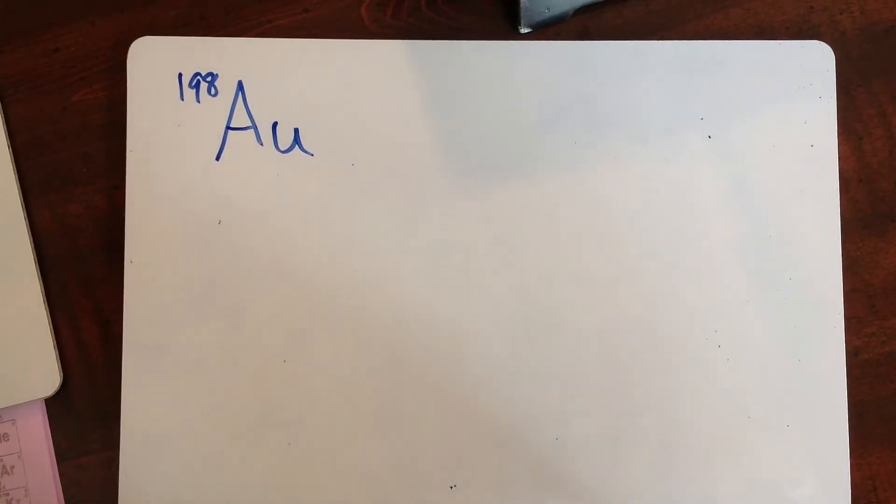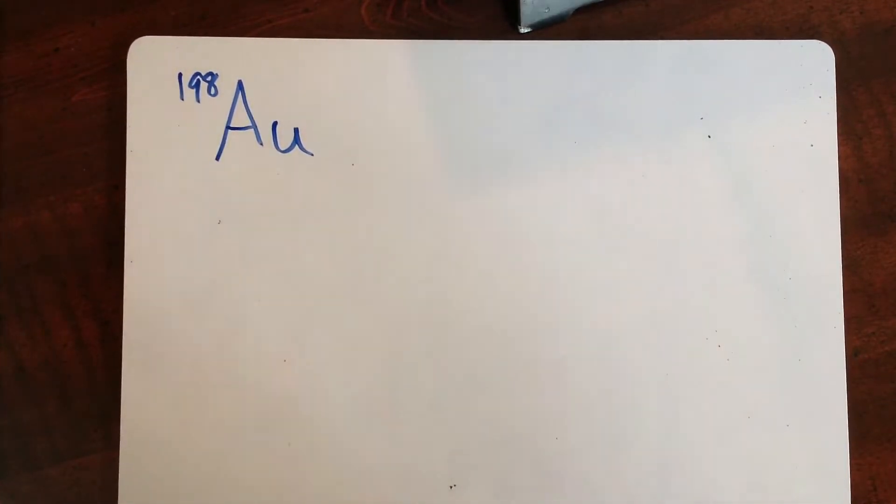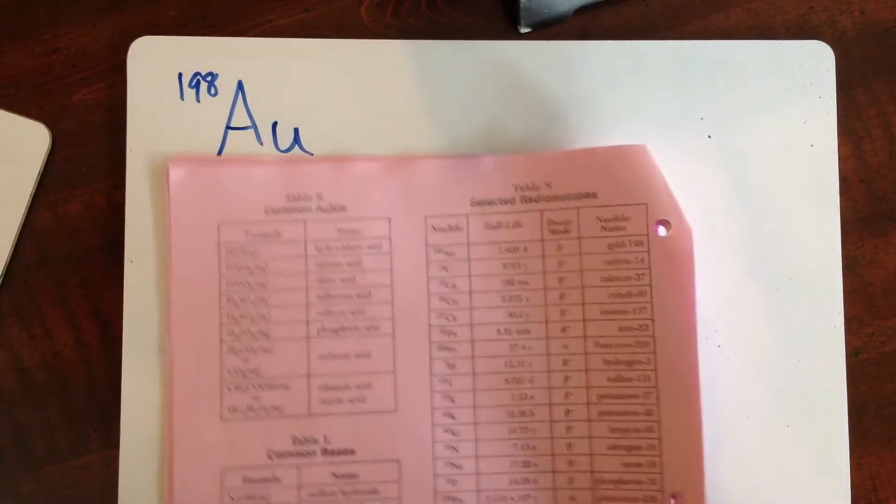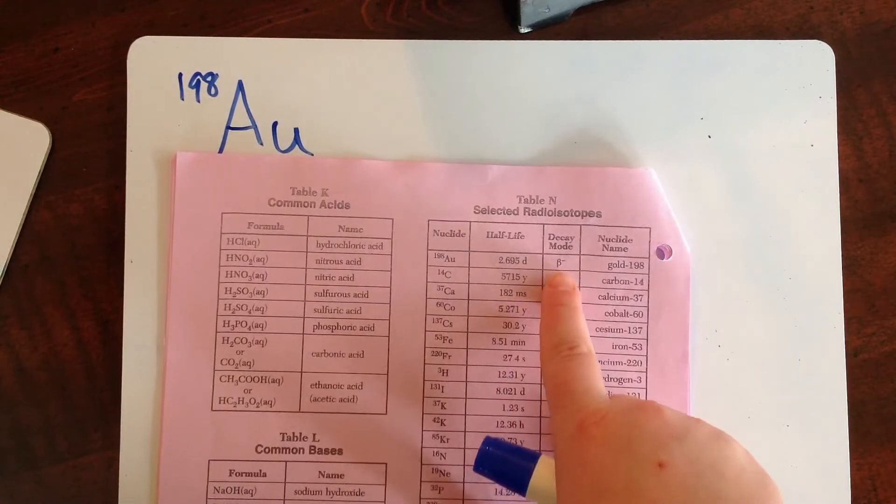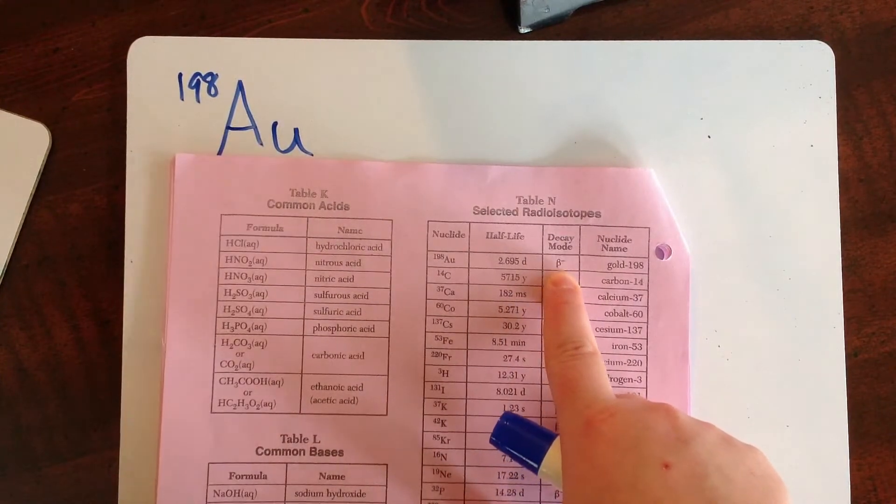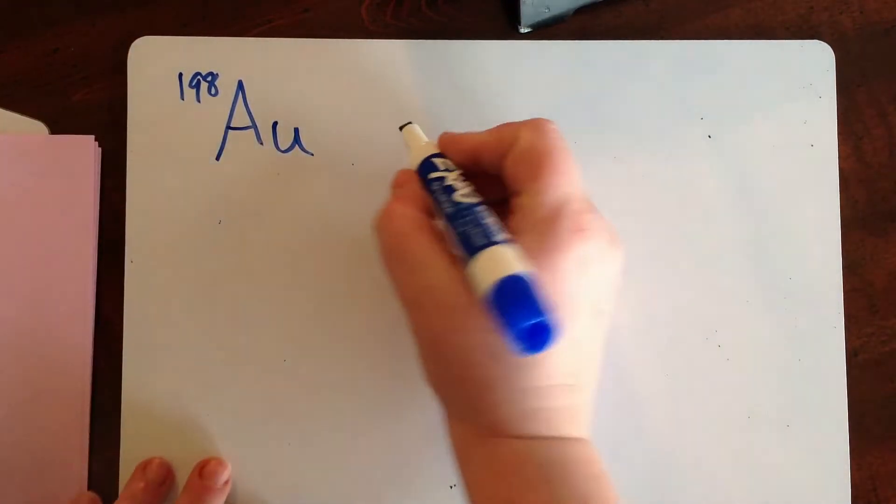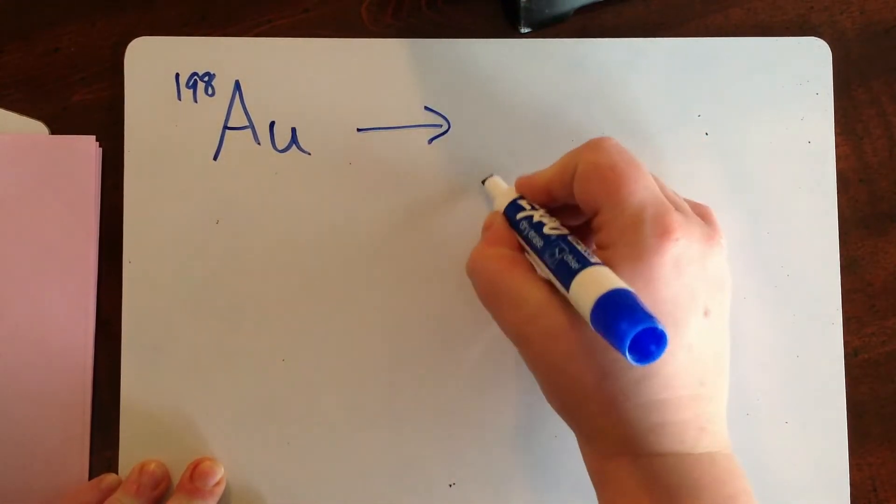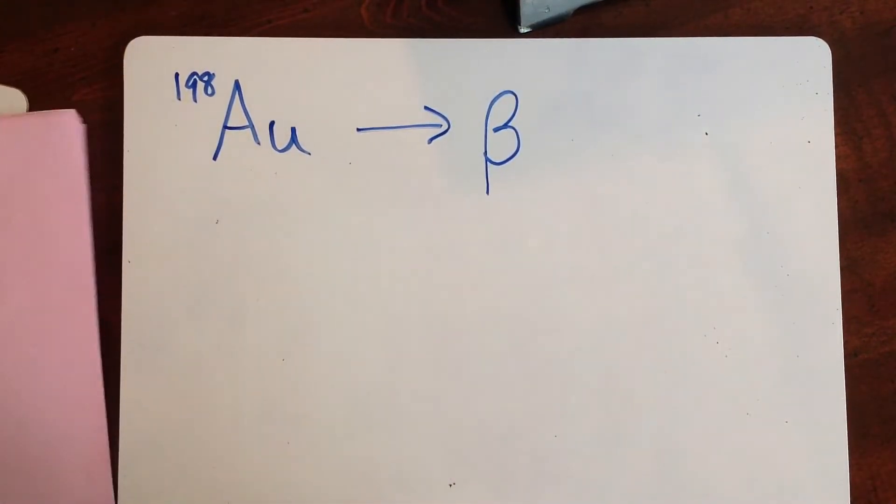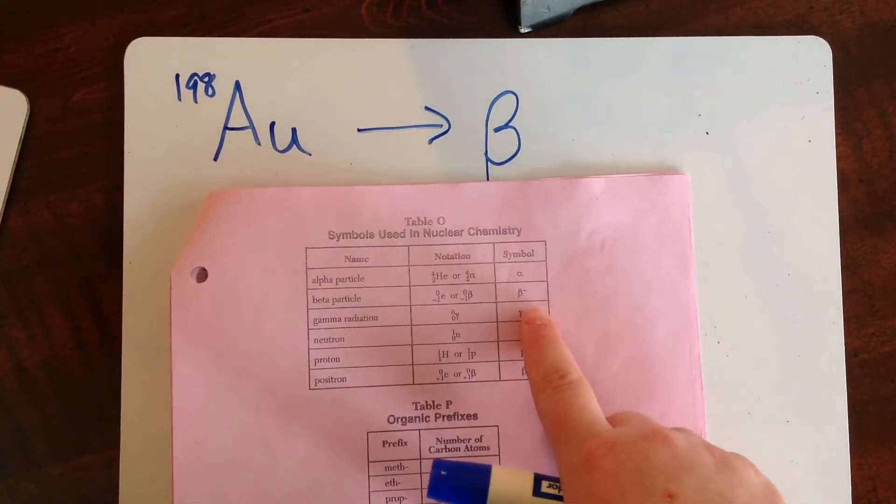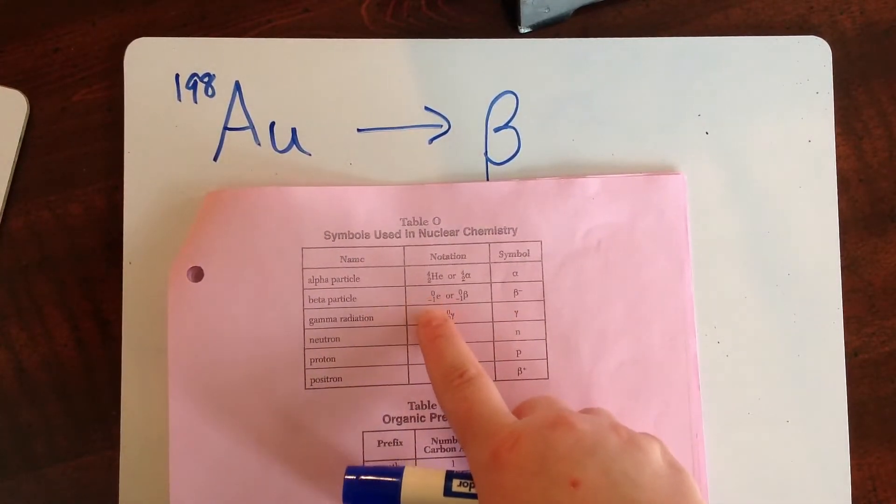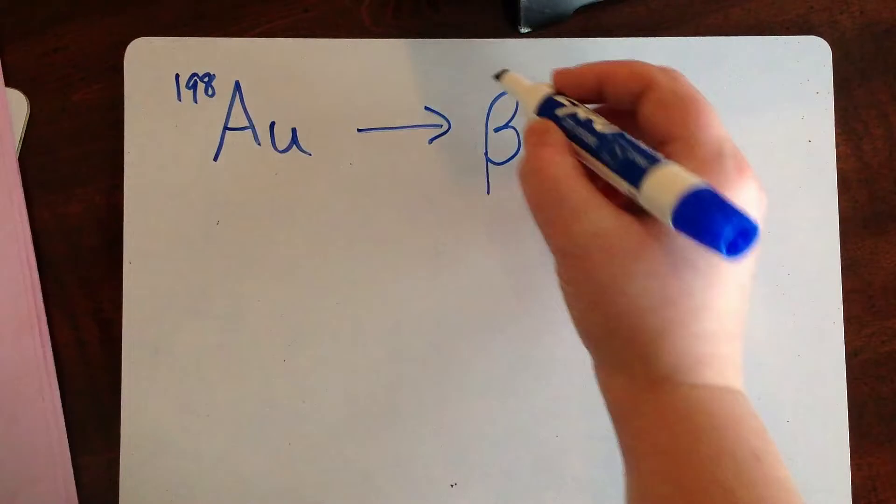If we look at gold 198, on table N we can see that gold 198 undergoes beta decay. So I know that one of my products is going to be the beta particle. And if I look at the beta particle, again it has a 0 on the top and a negative 1 on the bottom.